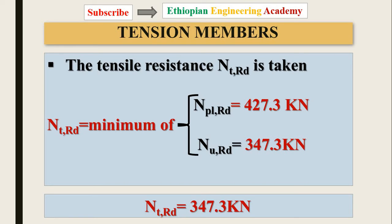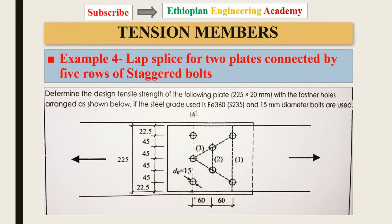If you have questions, you can use email or call — whatever you feel is best — to contact me. Please like and subscribe for more videos. The channel name is Utopian Engineering Academy. Now let's move on to Example 4: a lap splice for two plates connected by five rows of staggered bolts. Determine the design tensile strength of the following plate, with fastener holes arranged as shown, using the given steel grade and bolt diameter of 15 mm.